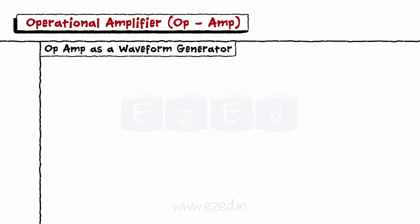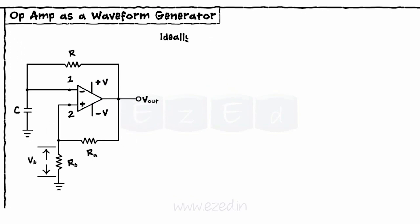As soon as the op-amp is supplied with the supply voltages plus V and minus V, we get some output as V out. Ideally, without any input applied, the output should be zero. But practically, we get some non-zero output.